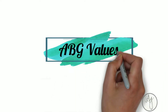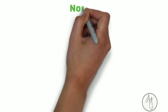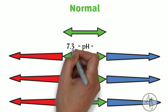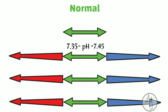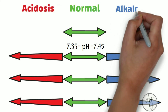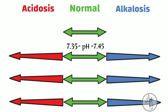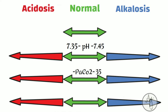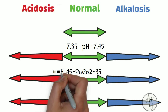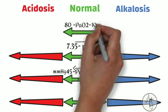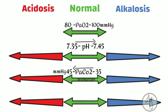Let's see what the normal values of an ABG are. The normal value of pH is between 7.35 to 7.45 — anything less than 7.35 is acidotic and more than 7.45 is alkalotic. The normal value of carbon dioxide is 35 to 45 mmHg, very easy to remember because pH is 7.35–7.45 whereas CO2 is 35–45. The normal oxygen value is 80 to 100 mmHg and bicarbonate is 22 to 26 mEq/L.